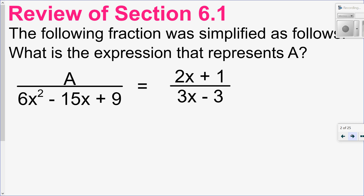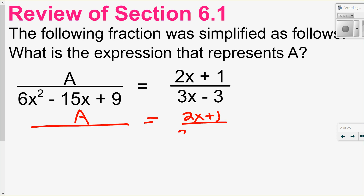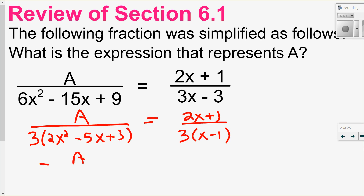Let's try another one. In this question, the fraction on the left is simplified to give us the fraction on the right, but we're not given non-permissible values. So we're just going to work backwards to figure out what the value of a is. I'm going to start by factoring everything. Over here, I notice I have a greatest common factor of 3 that I'll take out. On the left-hand side, 6, 15, and 9 also have a GCF of 3, so I'll take that out as well.